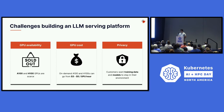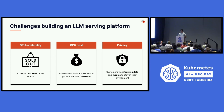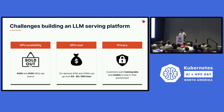Once we started building this platform, there were about three big challenges that we faced: the first was GPU availability, then GPU cost, and finally privacy. Despite there being many breakthroughs in fine-tuning and serving technology for commodity hardware, there are still a lot of limitations around what you can do unless you have a lot of GPU memory. The current standard for working with large language models is the NVIDIA A100, which is quite difficult to find in AWS or Azure.